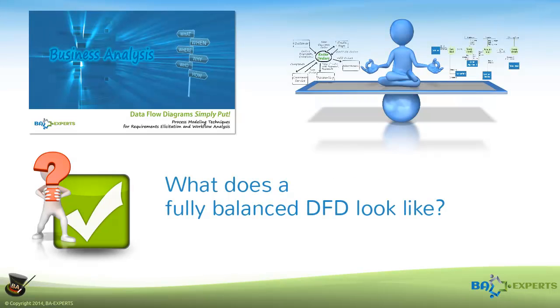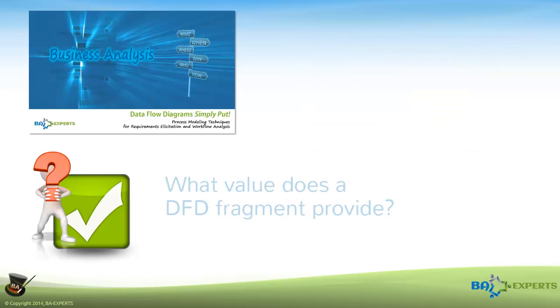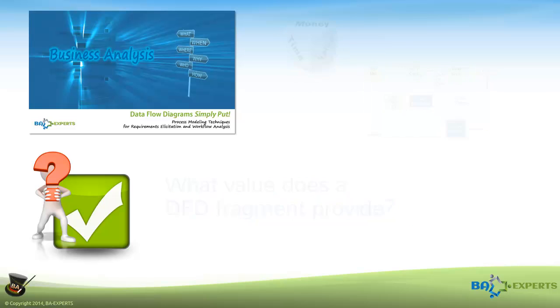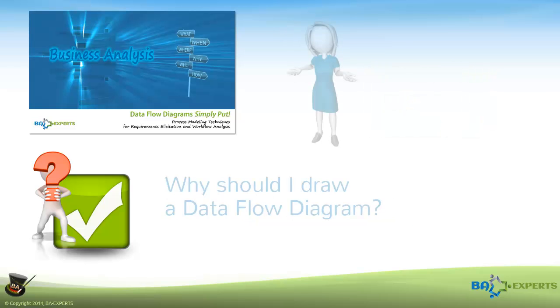What does a fully balanced DFD look like? What value does a DFD fragment provide? And ultimately, why should I draw a Dataflow Diagram?